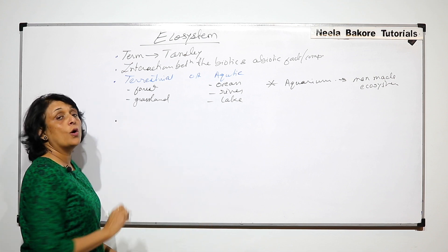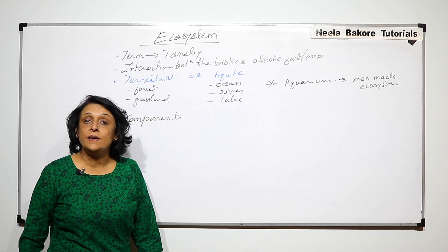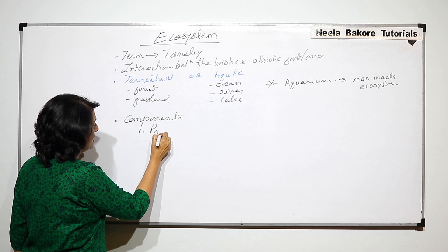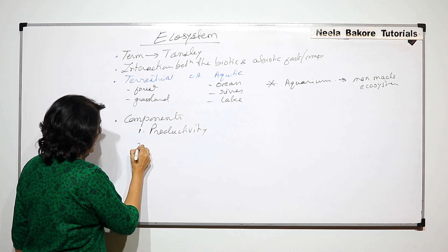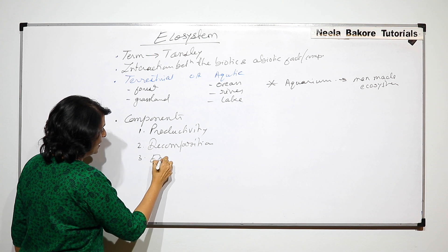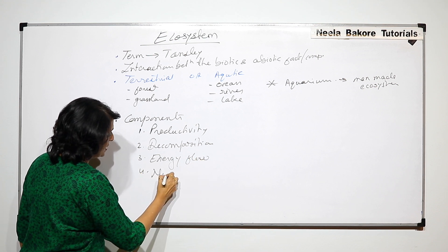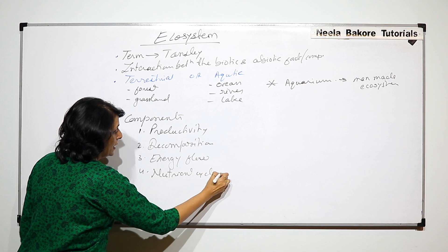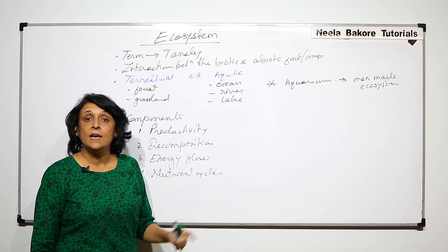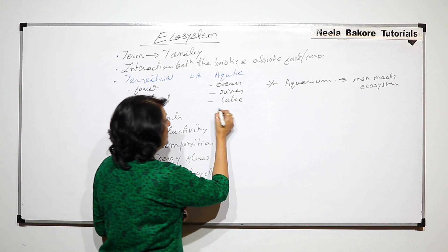Ecosystems have four components, and the stability of an ecosystem depends on these components. The first is productivity, the second is decomposition, the third is energy flow, and the fourth is nutrient cycles. These are the four factors which decide the stability of an ecosystem. We will start with the first one — productivity.